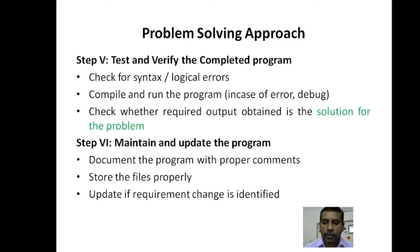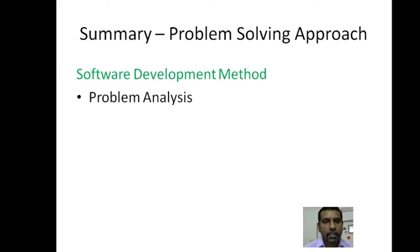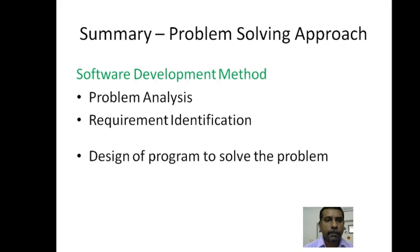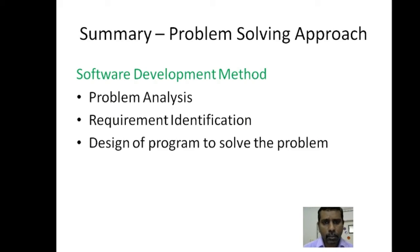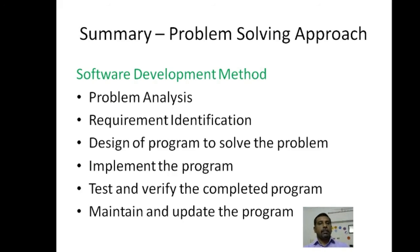So these are the steps in problem solving approach. To summarize, the problem solving approach in software development method: whatever we have seen now comprises the software development method. First step, we analyzed the problem - that is understanding of the problem. Second step, data requirements - we identified the data required for solving this problem. Third step is design of pseudocode or algorithm or program to solve the problem. Fourth step, implement the program. And then fifth one, test and verify the completed program. Then maintain and update the program. So these are the six steps that are given in software development method.